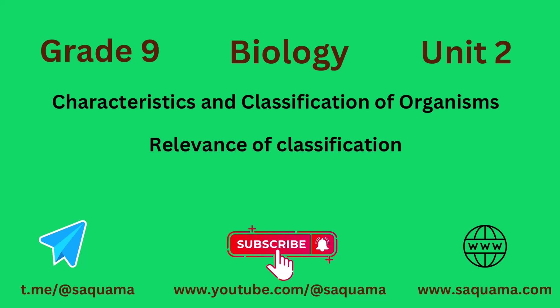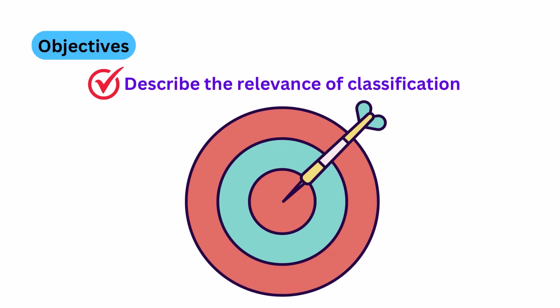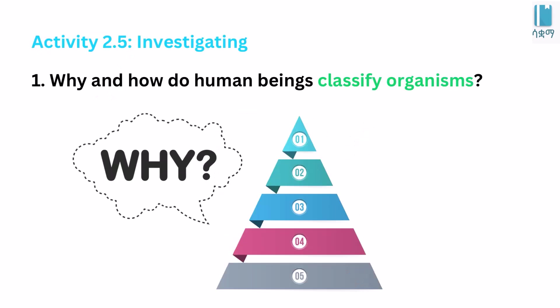Today I'm going to talk about the grade 9 biology unit 2 and subunit: Relevance of Classification. Let's look at activity 2.5 — Investigate: How do human beings classify organisms?